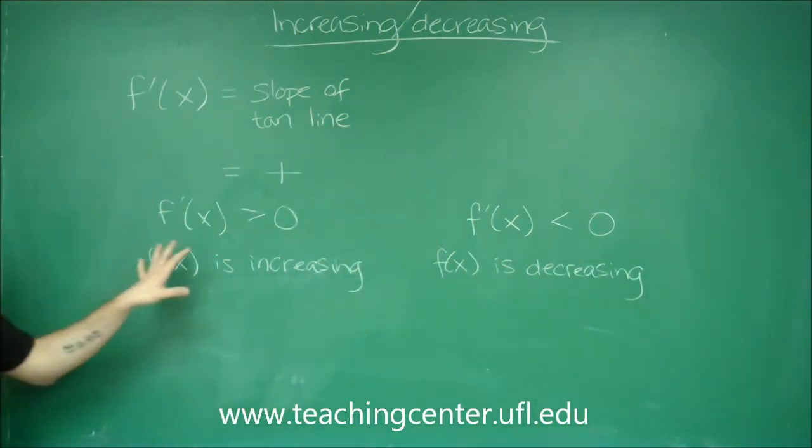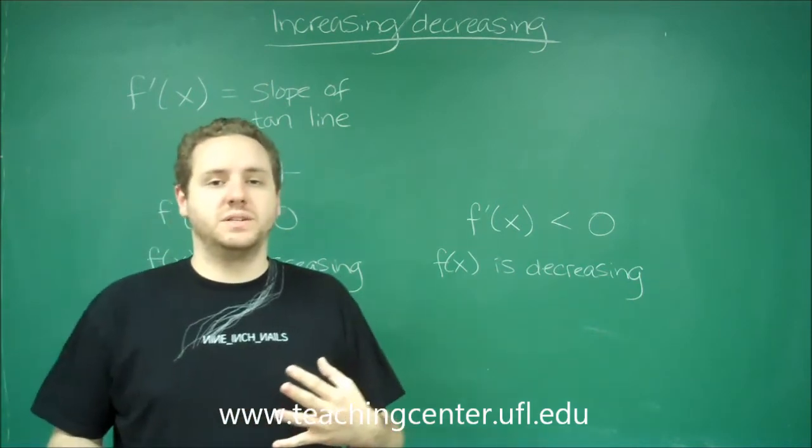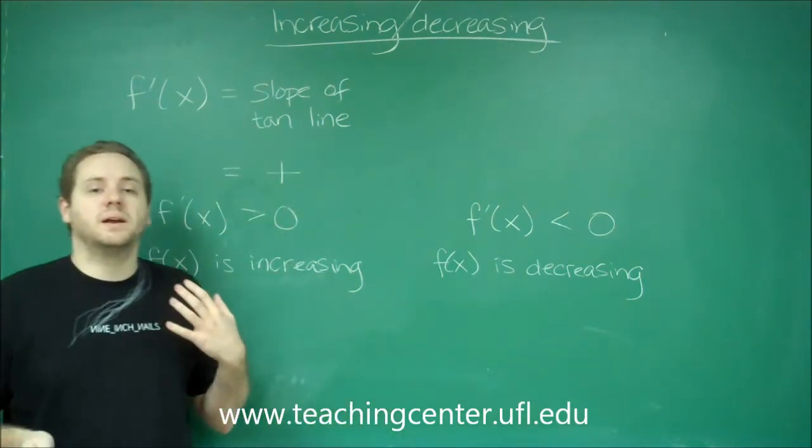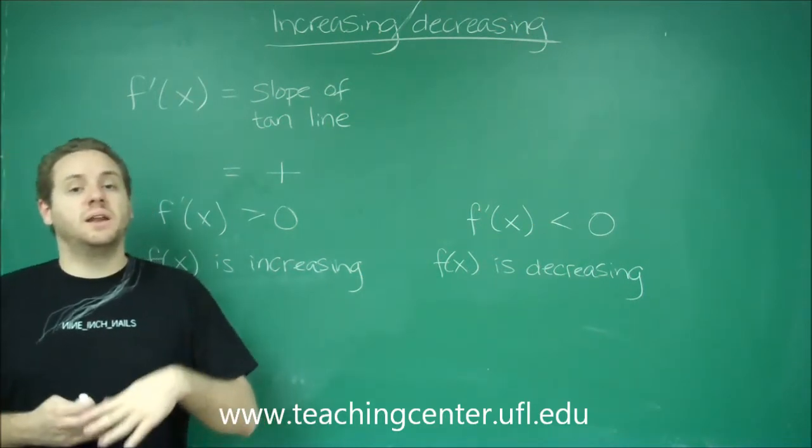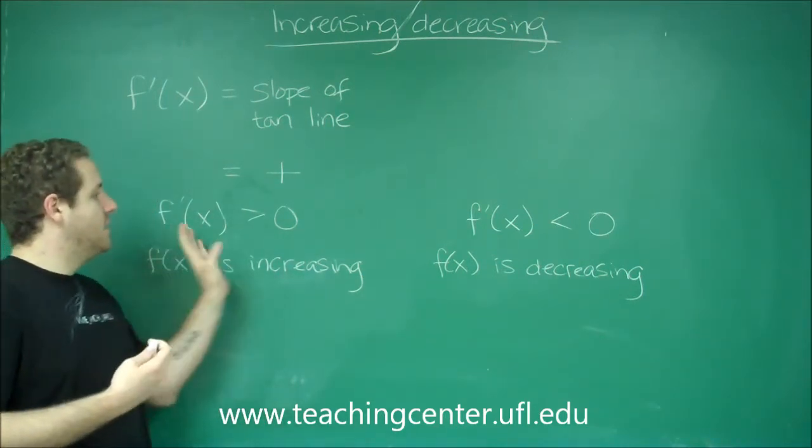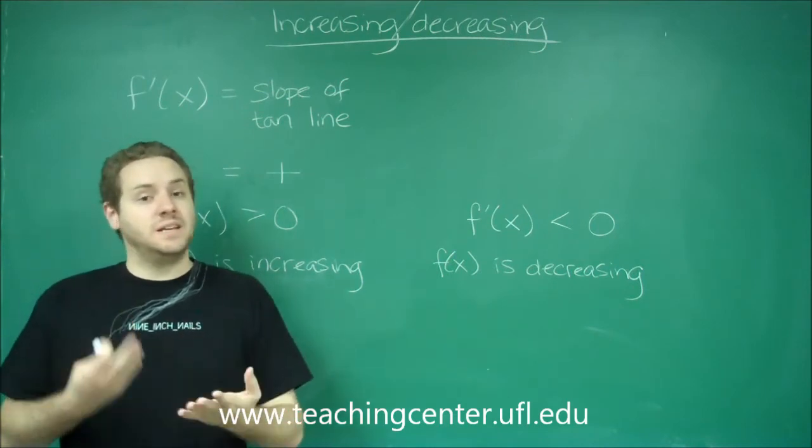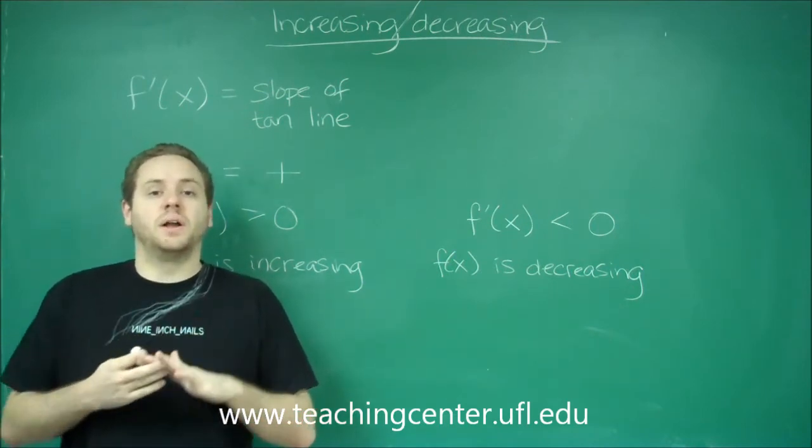So in order to figure out when a function is positive or when a function is negative, if you have a complex algebraic expression, usually the easiest way to do that, if you remember going back to pre-calculus, is finding out when it is actually equal to zero and then drawing a number line.